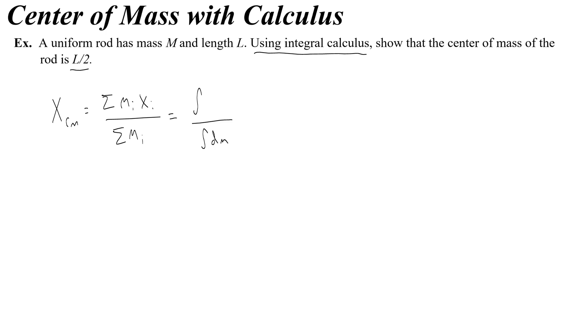So we would write this as dm, and then this we would write as xdm, where the rod, if you can imagine having a length l and some mass that we're going to call m, it's basically like saying, well take this little tiny piece of mass and infinitely add it up so you get the total mass.